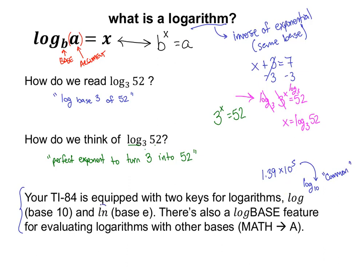In chemistry class you'll see things like 1.39 times 10 to the fifth — scientific notation uses 10 to some power a lot. So it's very nice to have a log with a base of 10 to undo an exponential base of 10. That's called the common log. The calculator also has the L-N key, which represents log with a base of e. It's called LN because it has a natural base — e is the base of continuous or natural growth.